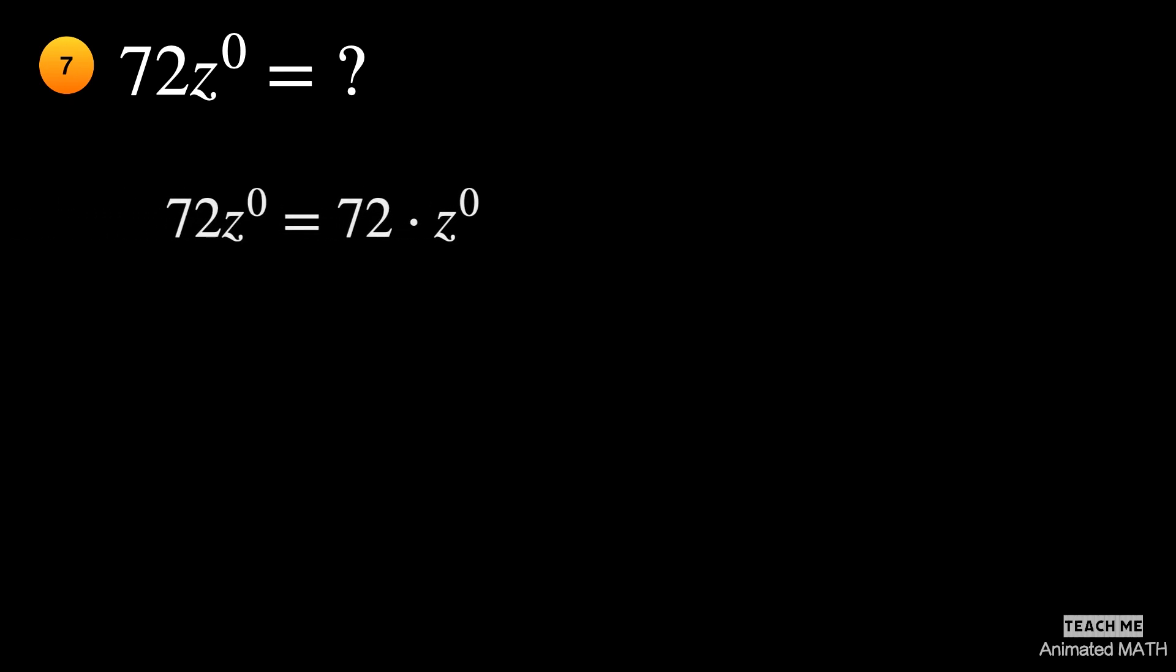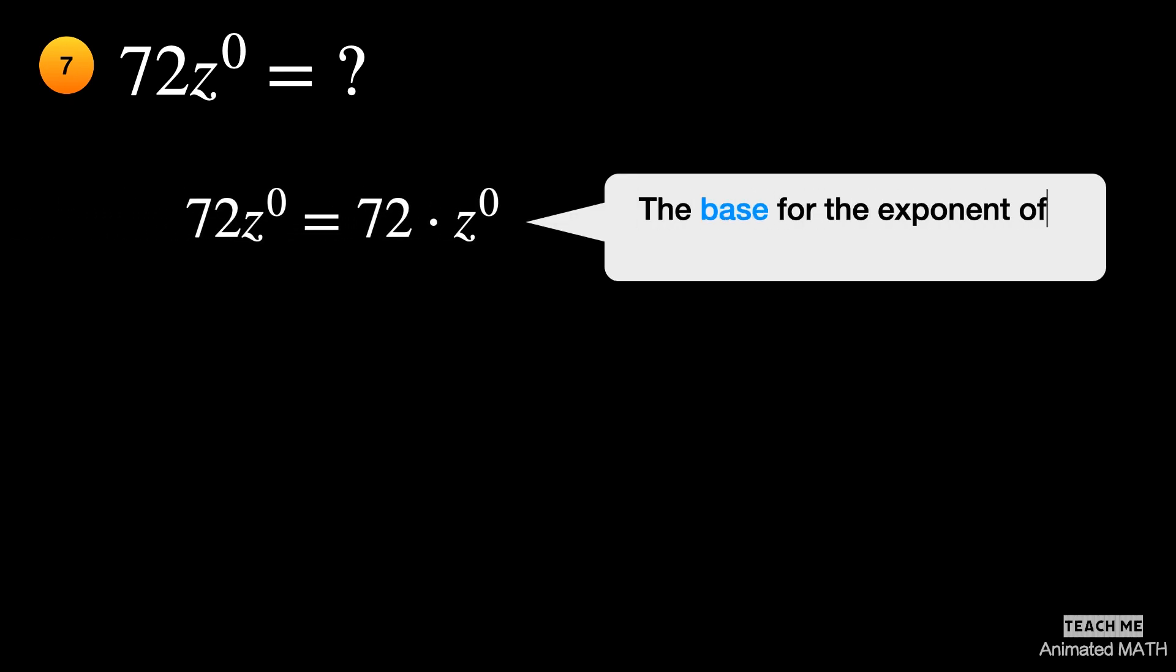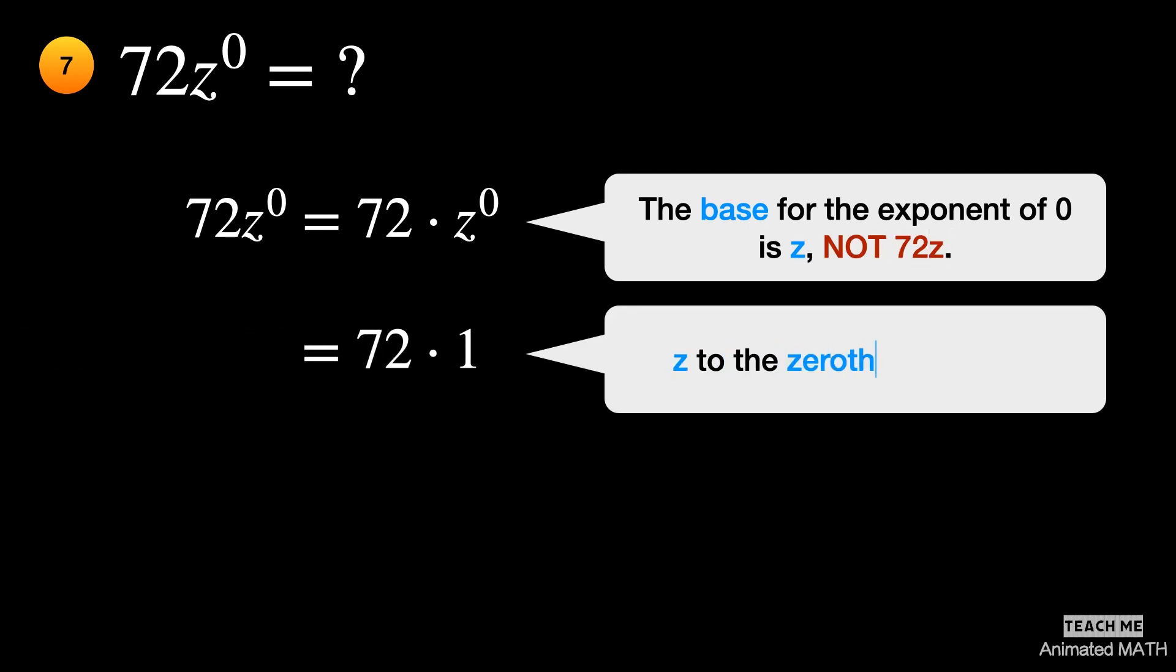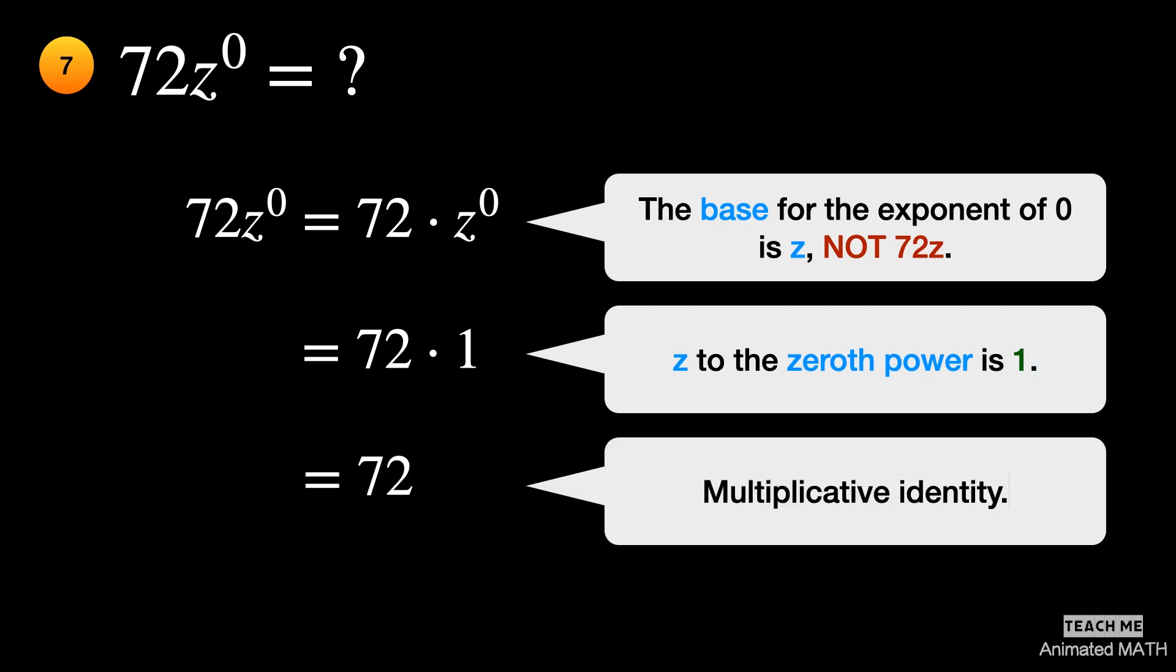The base for the exponent of zero is z, not 72z. The product of 72 and z raised to the zeroth power is 72 times 1, or 72.